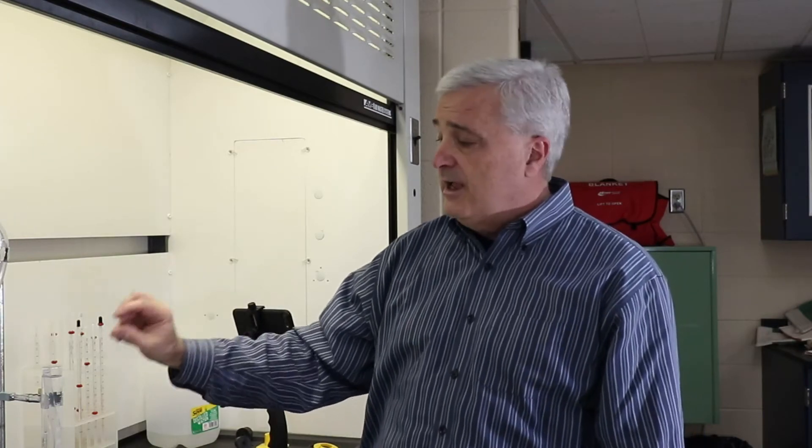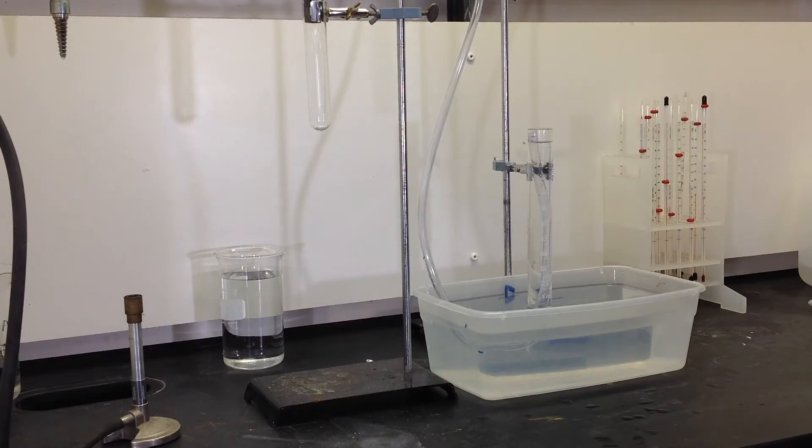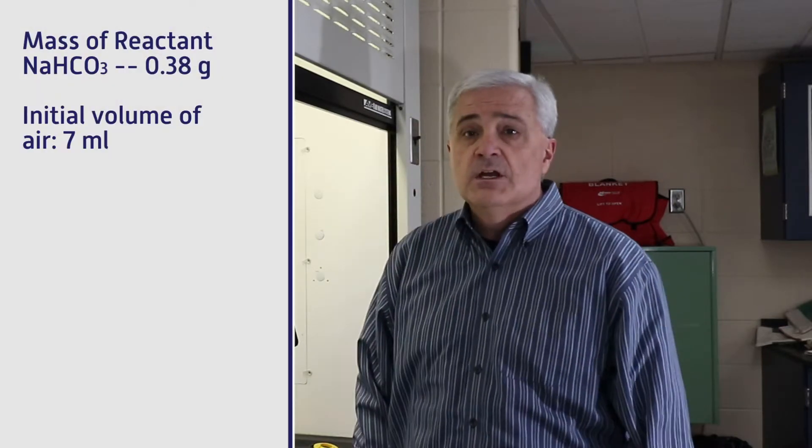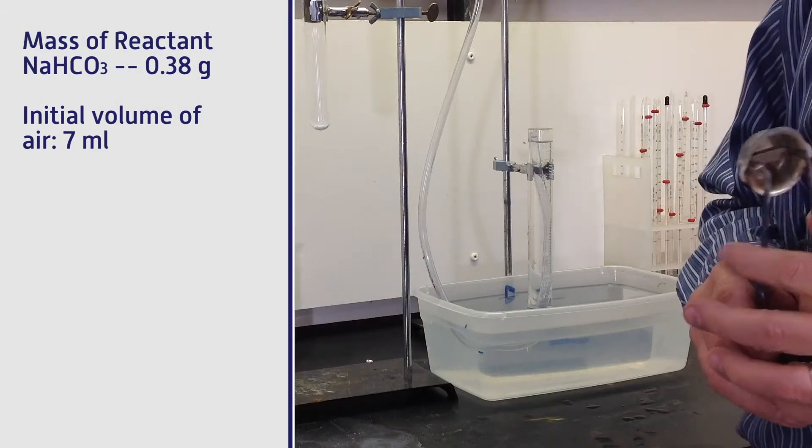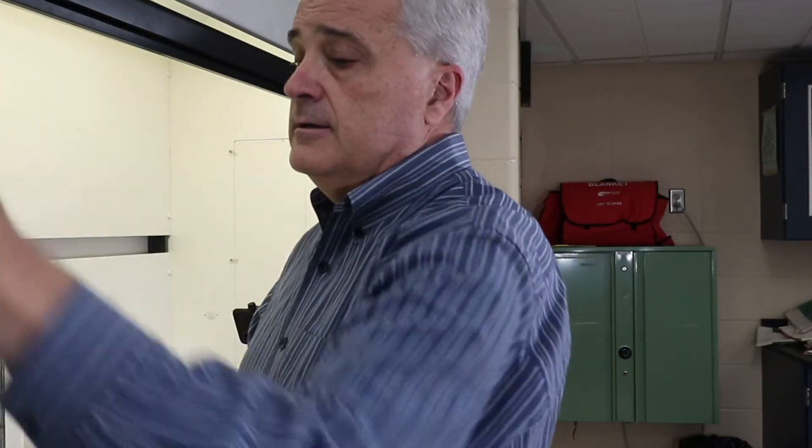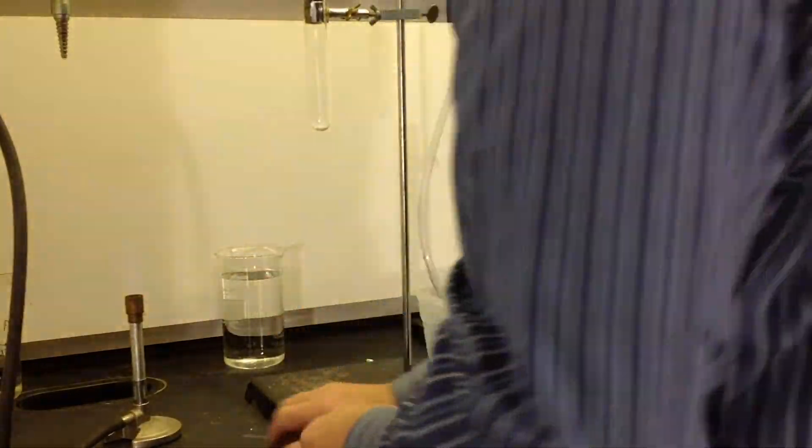At this point, I'm going to read the graduation and determine what the initial volume of air inside the graduated cylinder is. And so I'm reading that to be seven milliliters. Now I need to light the burner. I'm going to turn the vent on, turn the gas on, and light the burner. Now we're ready for the reaction to begin.